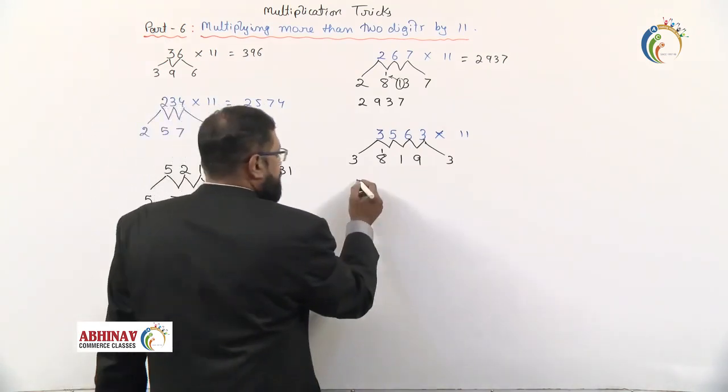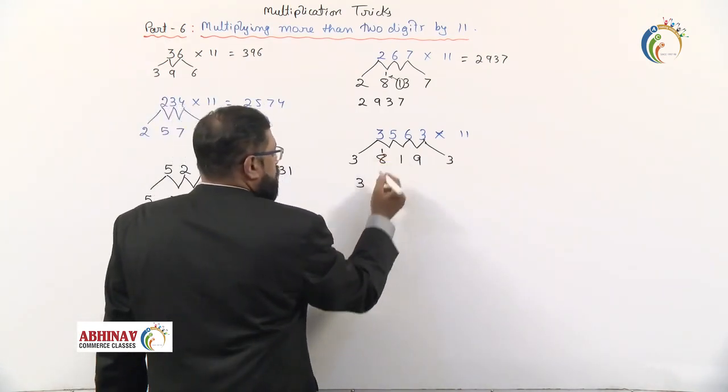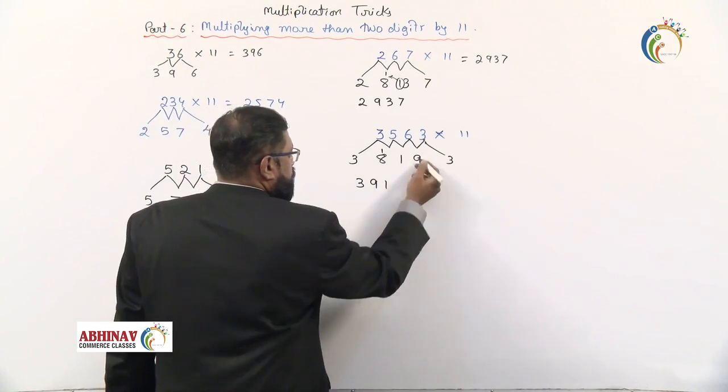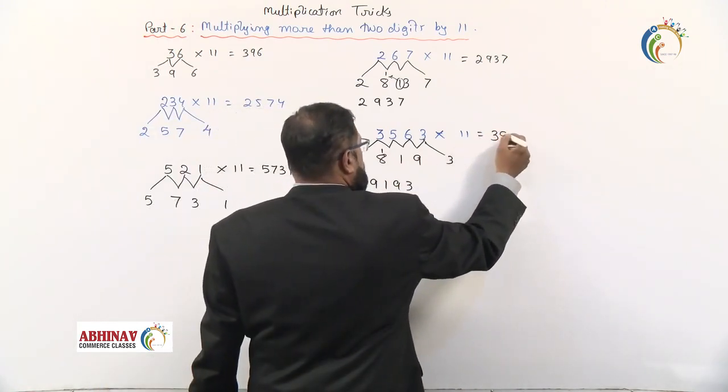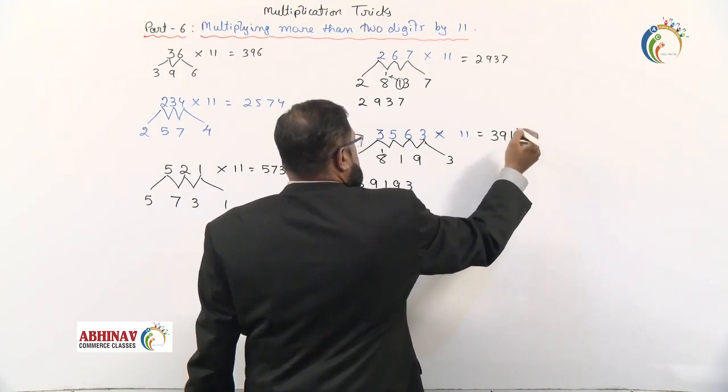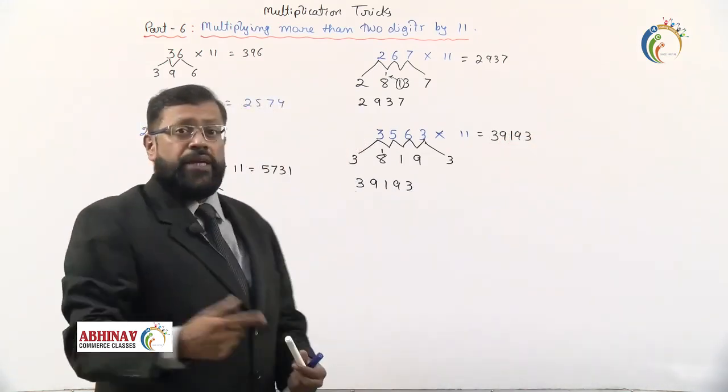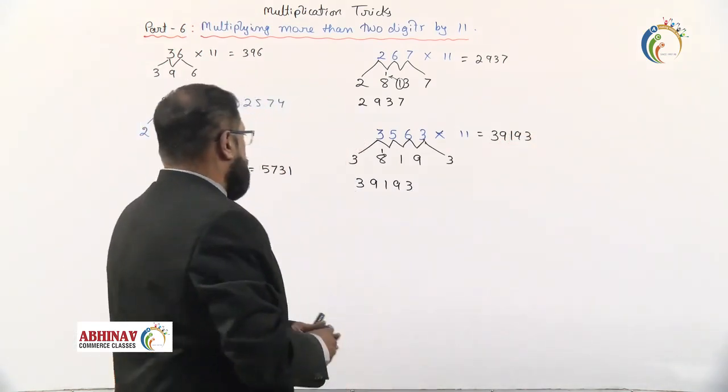So the answer is going to be: 3, 1 plus 8 is 9, this 1, this 3. Answer is 39193. This is how we do it with carry forwarding numbers. Let's take one more example.